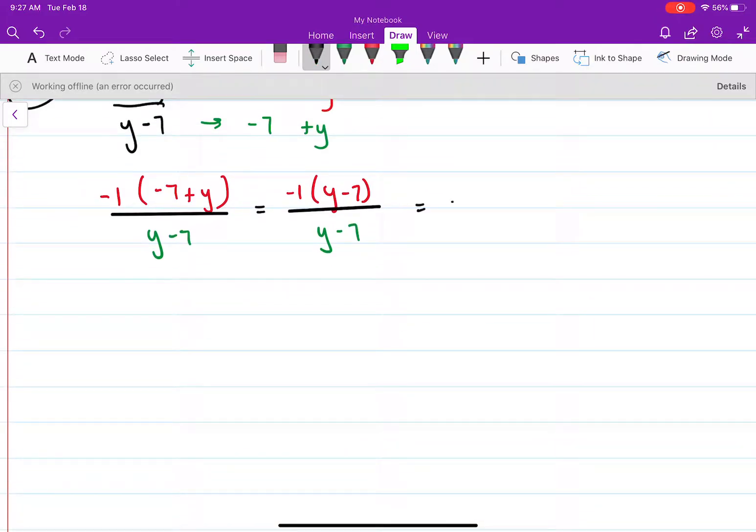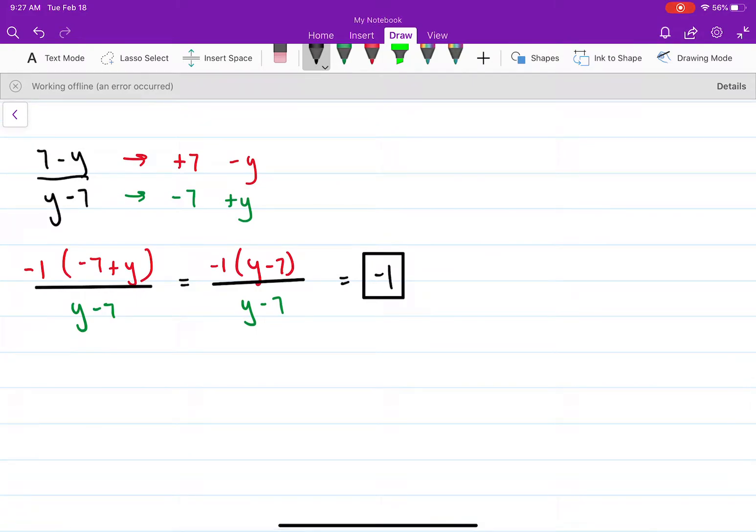So therefore, we're going to have just a negative 1 left. But don't forget, we have to write that the domain is such that x is all reals, right, and x cannot equal to 7.